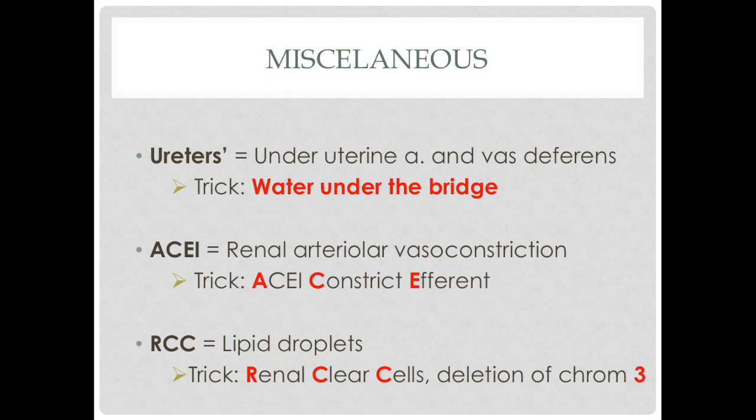For ACE inhibitors, which are renal arteriolar vasoconstrictors, I take the letters and spell out: ACE inhibitors constrict efferent. For renal cell carcinoma, which causes accumulation of lipid droplets, I take the letters and form 'renal clear cells,' RCC. This is also going to be caused by a deletion of chromosome 3, and there are three letters in RCC.